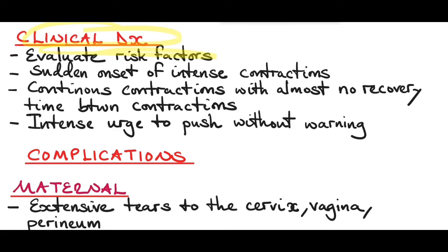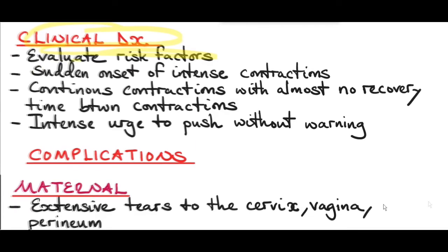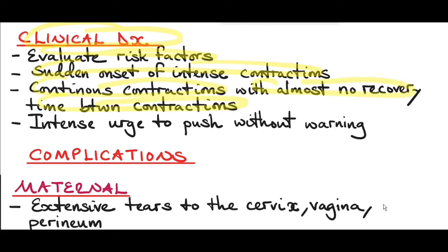It's also important to advise the patient to look out for the symptoms of precipitate labor. These include sudden onset of intense contractions. Remember that in the latent phase of labor, contractions are usually mild, so if the patient is having severe or moderate contractions in the latent phase, this should make you think of precipitate labor. Also watch for continuous contractions with almost no recovery time between contractions, and an intense urge to push without warning.